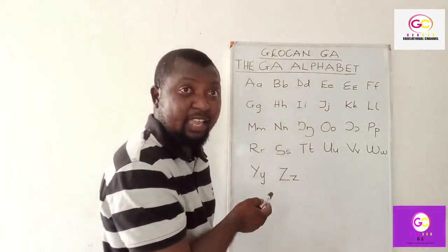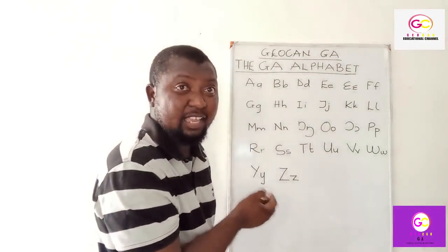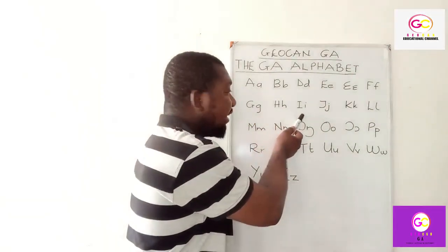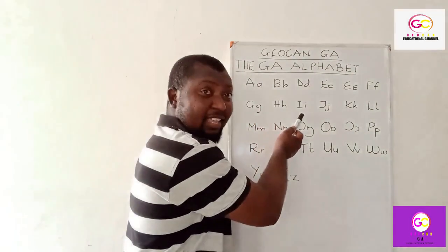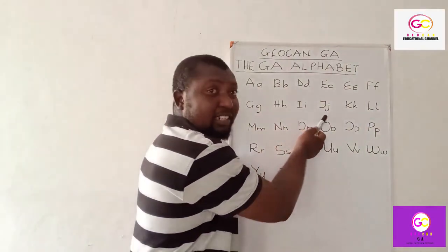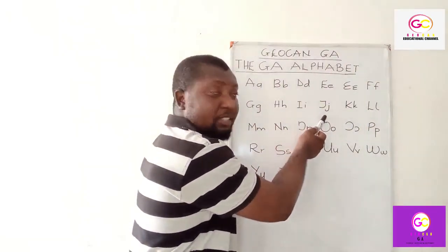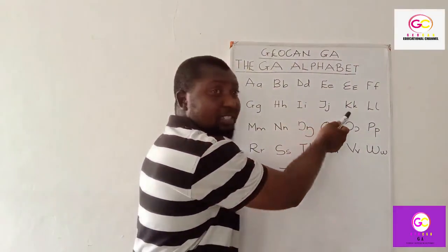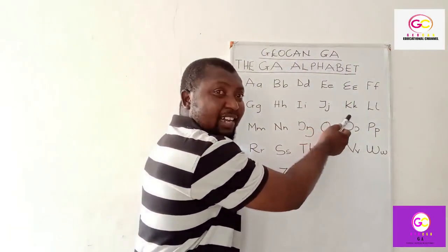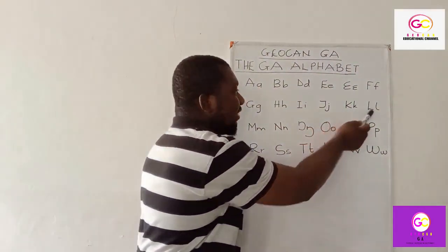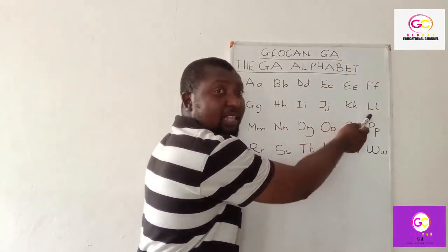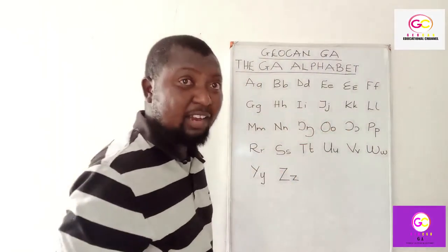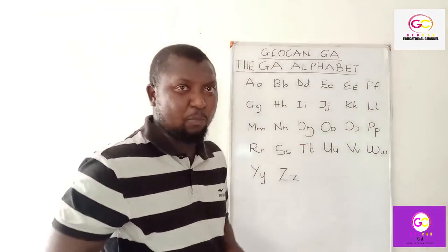This one sounds 'he' — say 'he.' This one sounds 'i.' Then 'j' — sounds 'j,' repeat after me: 'j.' Good. This one sounds 'k' — 'k.' And this one sounds 'o' — 'o.' Good. I hope you got that one.